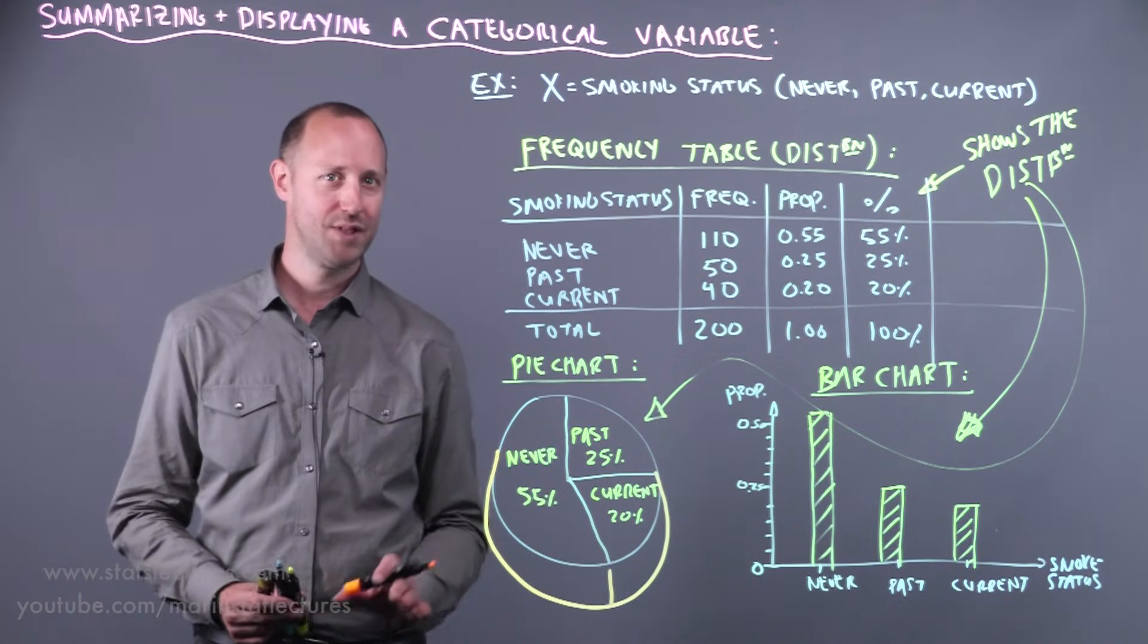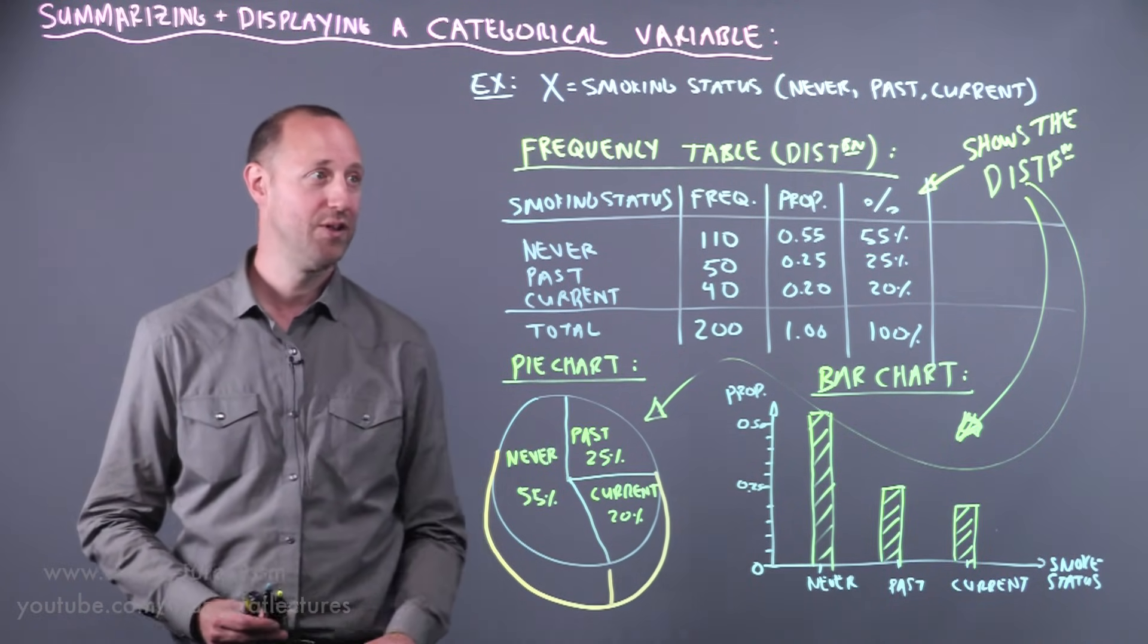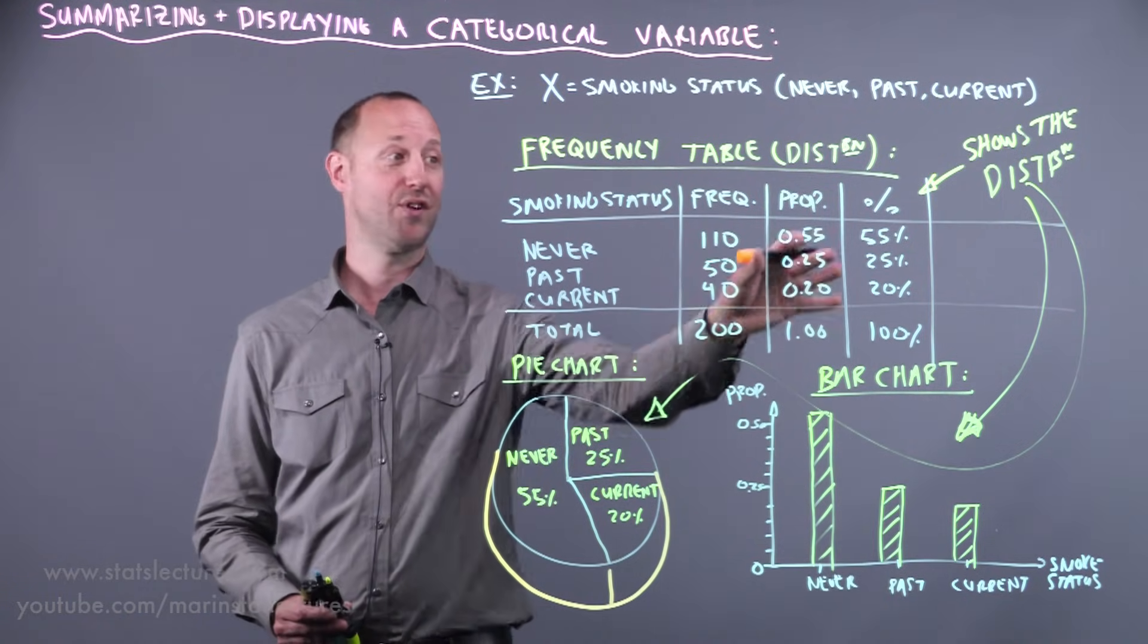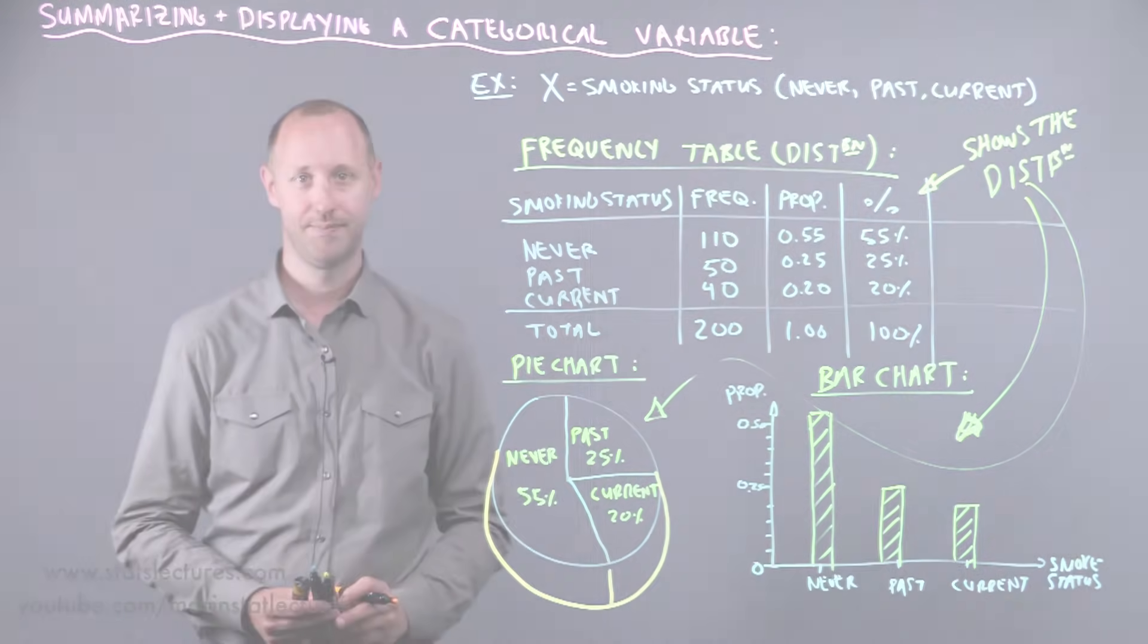One of the key takeaways here is the most simple summary for a categorical variable is to count how many people fall in each of the categories and then convert that to a proportion or a percentage. Stick around, guys, because we got lots more.